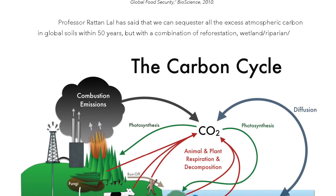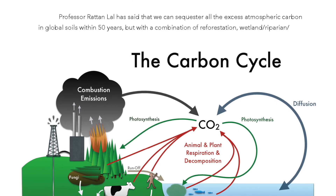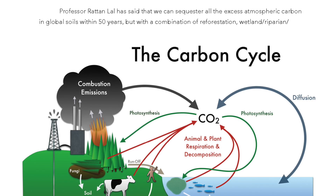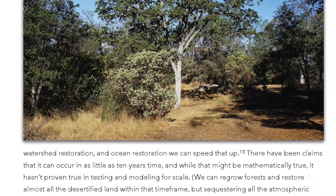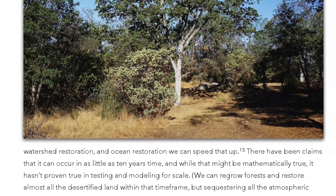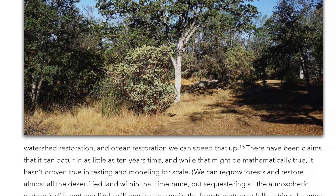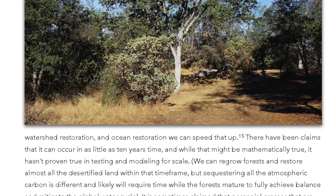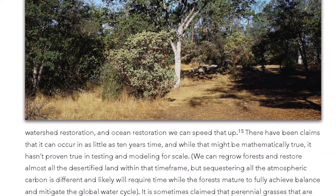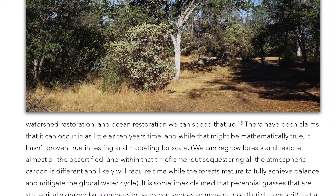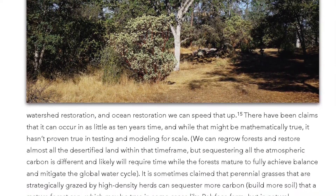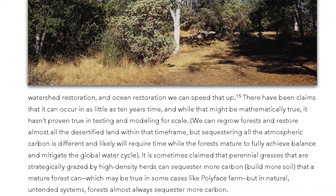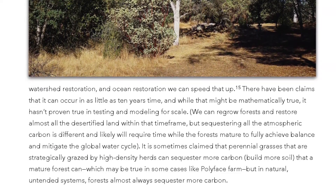Professor Rutan Lal has said that we can sequester all the excess atmospheric carbon in global soils within 50 years, but with a combination of reforestation, wetland, riparian, watershed restoration, and ocean restoration, we can speed that up. There have been claims that it can occur in as little as 10 years, and while that might be mathematically true, it hasn't proven true in testing and modeling for scale. We can regrow forests and restore almost all desertified land within that time frame, but sequestering all the atmospheric carbon is different and likely will require time while the forests mature to fully achieve balance and mitigate the global water cycle.